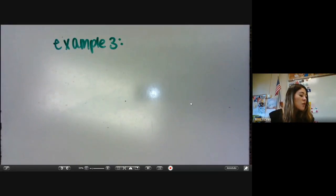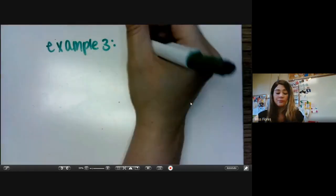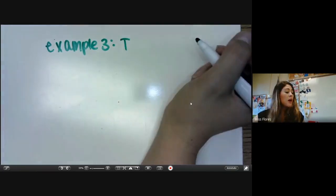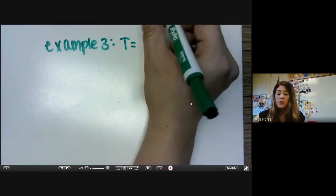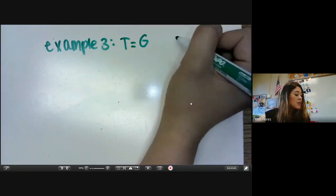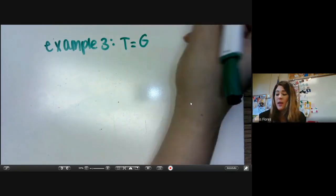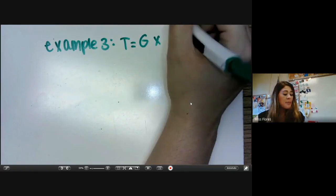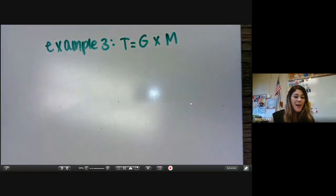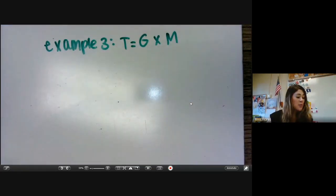Example three says Ed's car holds 20 gallons of gasoline. The car dealer told him he could drive 17 miles on each gallon of gas. How far can Ed drive on a full tank? So they give us an equation. The equation they give us is T for the total miles equals G, which is our total gallons of fuel. And then we multiply that by the miles per gallon. So this is our equation that we're going to plug it in.